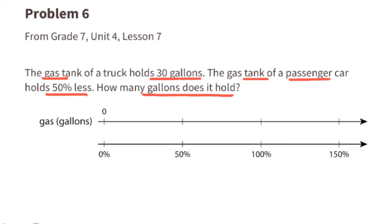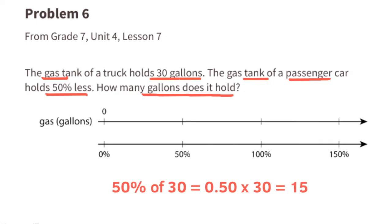Problem number six, from 7th grade Unit 4, Lesson 7: the gas tank of a truck holds 30 gallons and a passenger car holds 50 percent less. That's 50 percent of 30 gallons, which we can rewrite as 0.50 times 30, equaling 15. The passenger car's gas tank holds 15 gallons. 50 percent also means half of 30, and since 15 is half of 30, this confirms the answer.